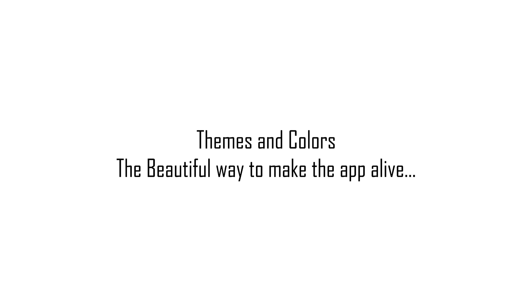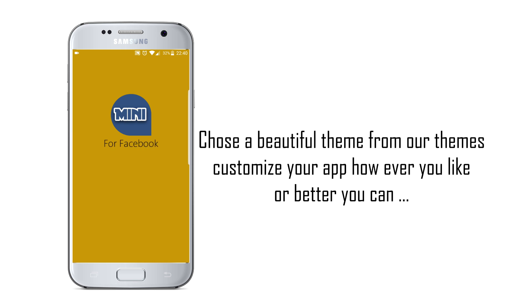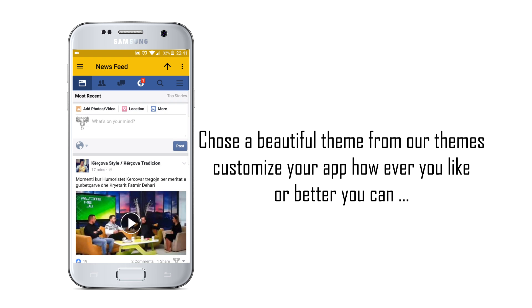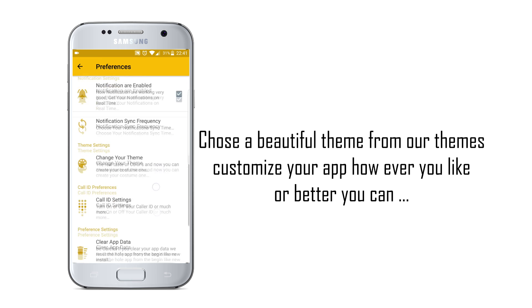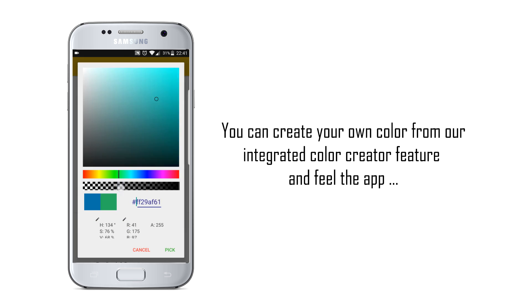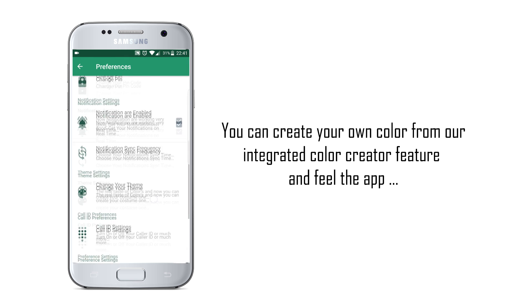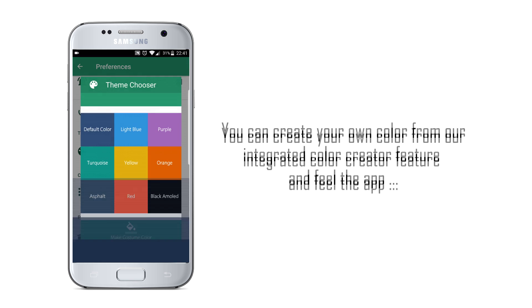Next, themes and colors — the beautiful way to make the app alive. Have you tried the theme chooser? There are really beautiful material colors that you can apply to the app and feel the way it looks. And there is also a cool feature — our color chooser dialogue — so you can create your own personal color for maximum customization of the app.